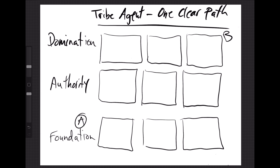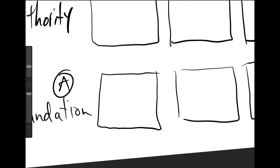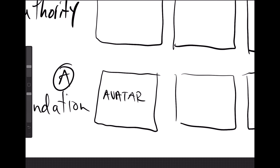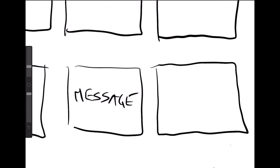In the last video, I told you that the tribe agent system is designed to get you to go from A — no direction, low to little income, and a lot of frustration, chasing the shiny object — all the way to B, which is profit systems. So let's focus on the foundation. There are three distinct steps: the first one is the avatar, the second one is your message, and then finally your signature solution.